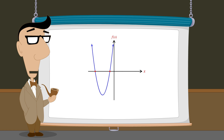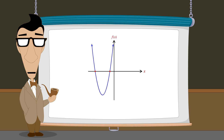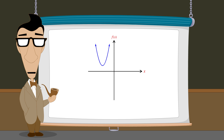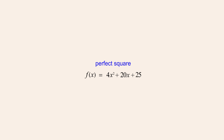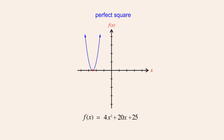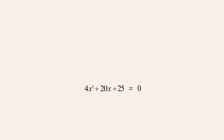We have seen that quadratic equations may have two real solutions, a single real solution, or no real solutions. So let's see what happens when we use the quadratic formula to solve a quadratic equation with a single solution. The quadratic function 4x-squared plus 20x plus 25 is a perfect square. And like all perfect square quadratic functions, it has a single x-intercept and thus a single zero. Now let's form a quadratic equation by equating this function to zero, then use the quadratic formula to find the solutions.